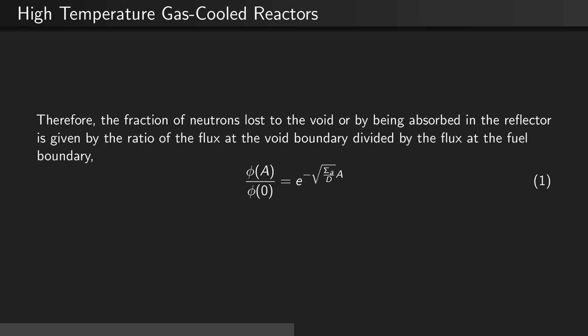Therefore, the fraction of neutrons lost to the void or by being absorbed in the reflector is given by the ratio of the flux at the void boundary divided by the flux at the fuel boundary. Therefore, phi of a divided by phi of 0 is just equal to e to the negative square root sigma a over d times a.